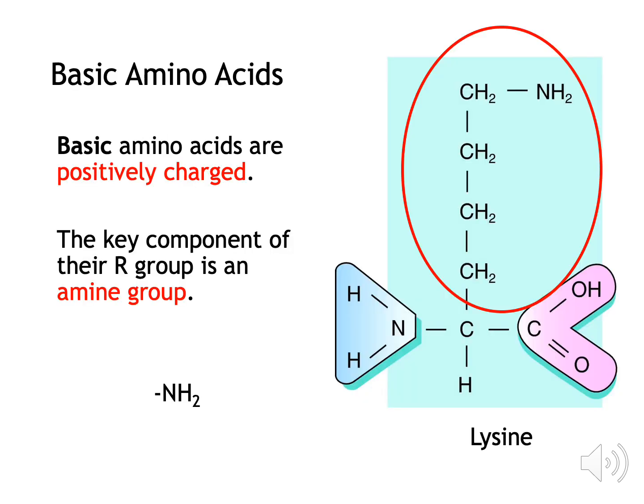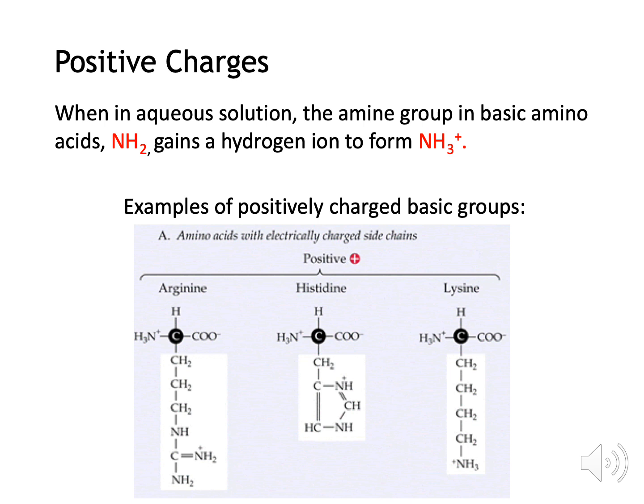Basic amino acids have an amine group in their R-group. The R-group can have other atoms, but if an amine group is included it is a basic amino acid. Basic amino acids are positively charged — an example is lysine. When we say basic groups have a positive charge, this is due to the addition of a hydrogen atom when the amino acid is in solution. When the amine group gains the extra hydrogen ion, it becomes positively charged.